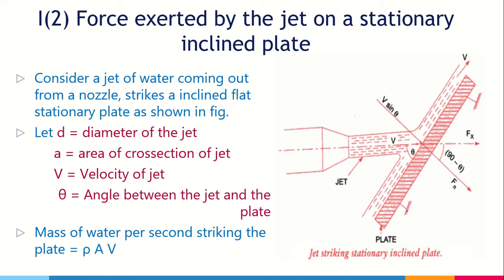Unlike the vertical plate case, we can't directly write the component of force because the plate is inclined with an angle of theta with the horizontal or with the direction of flow. First you need to resolve the components. To do that, initially calculate the force acting in the direction normal to the plate — we call it Fn. Then Fn is resolved into two components: Fx along the direction of the jet and Fy perpendicular to it. For inclined cases, always remember: calculate Fn first, then Fx and Fy.